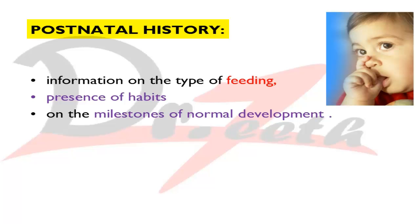For postnatal history, ask about the type of feeding — whether breastfeeding or bottle feeding. Breastfeeding is best for the baby. Bottle feeding can lead to rampant caries and early childhood caries, which can decrease arch length. Also ask about habits such as thumb sucking, mouth breathing, or retained infantile swallow — all of which can lead to malocclusions and may be retained into adult life.